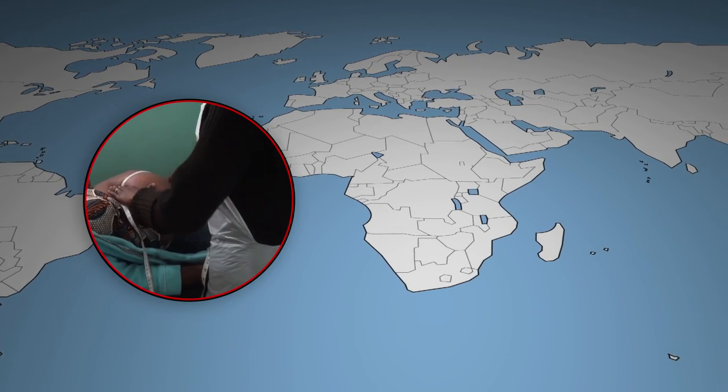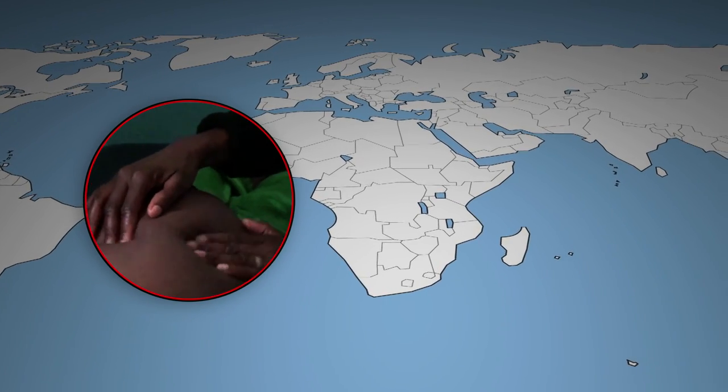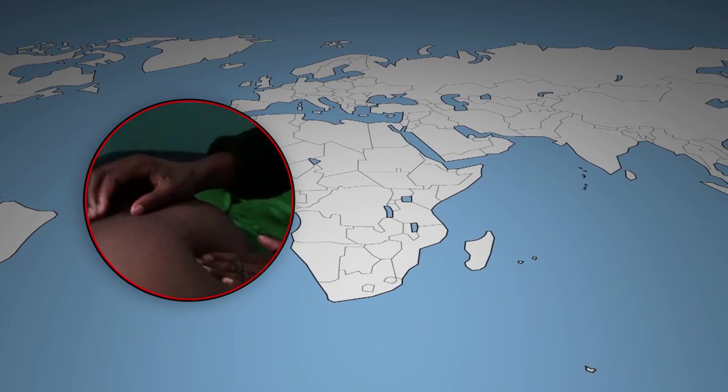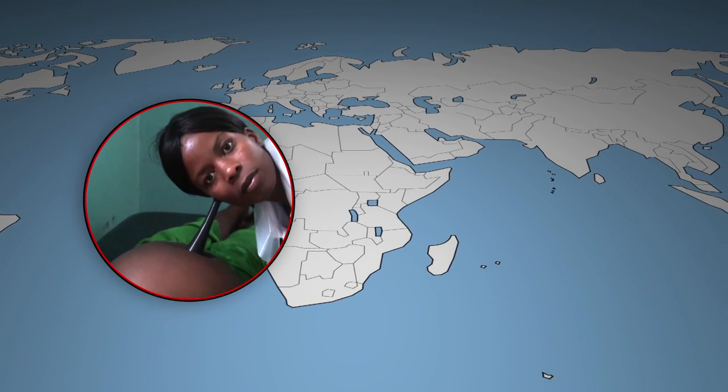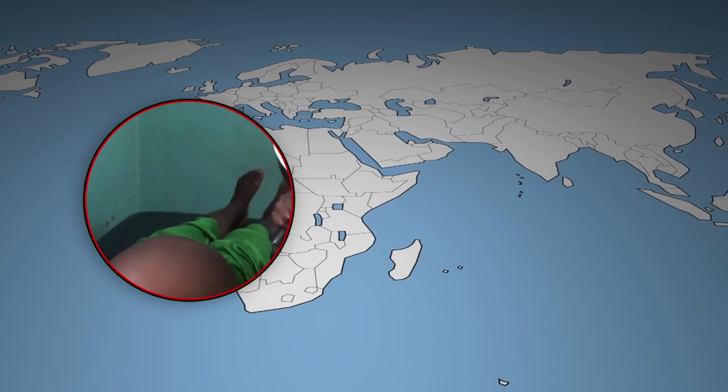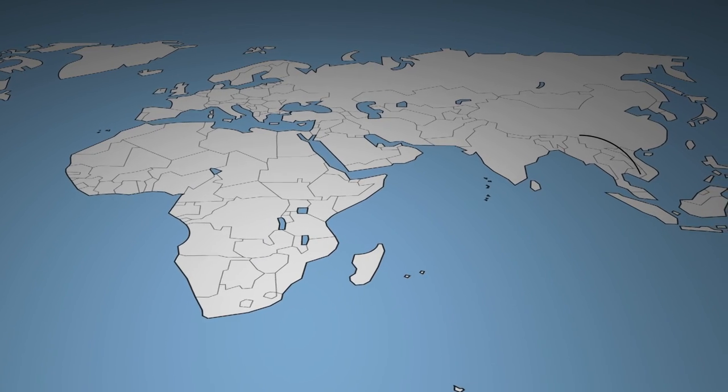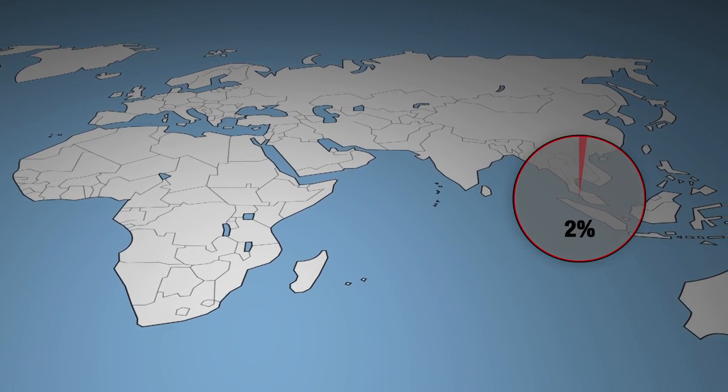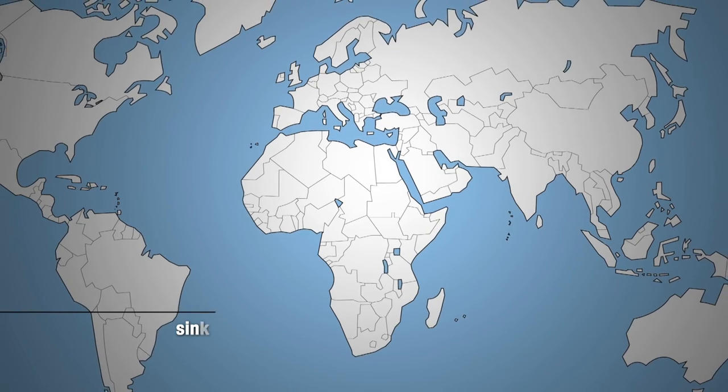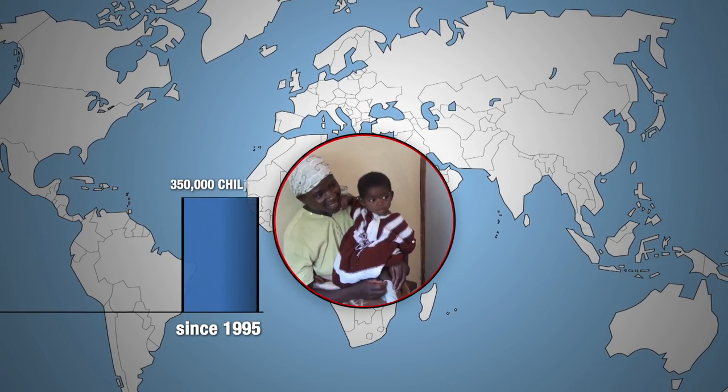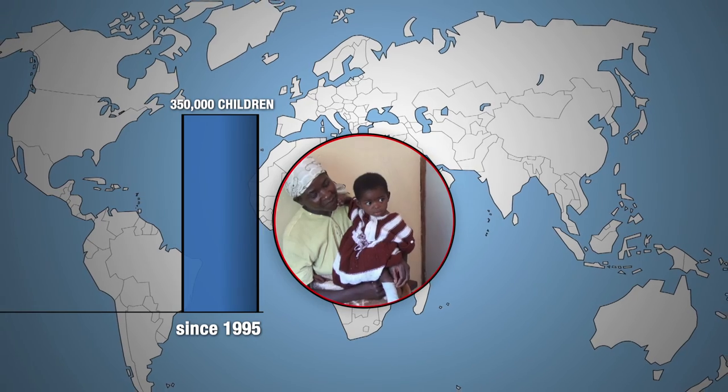However, there has been progress in eliminating mother-to-child transmission. With proper screening and treatment, the risk of a woman transmitting the HIV virus to her baby drops to 2%. Since 1995, 350,000 children have been spared from infection.